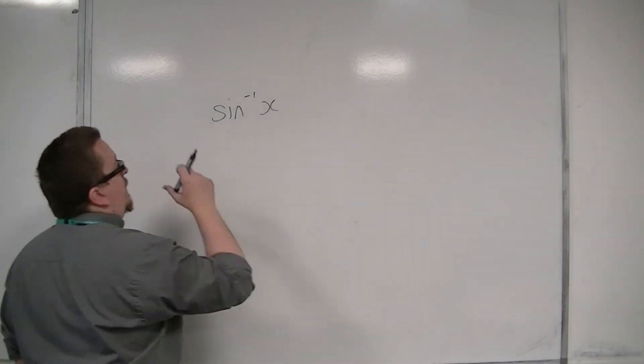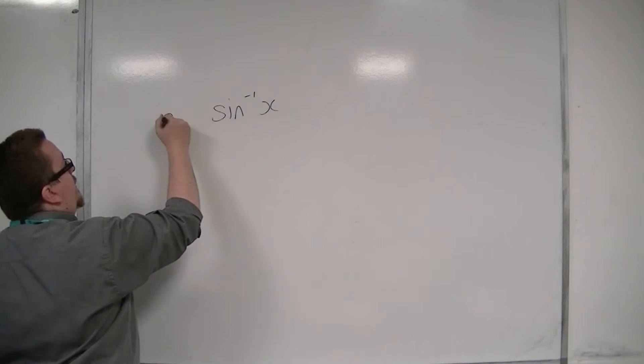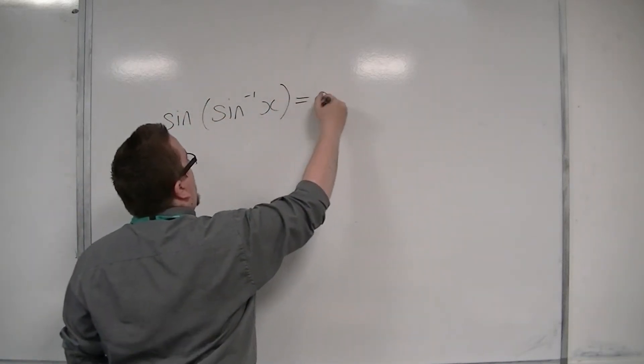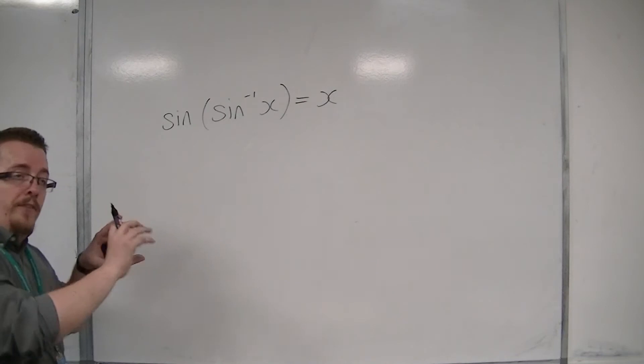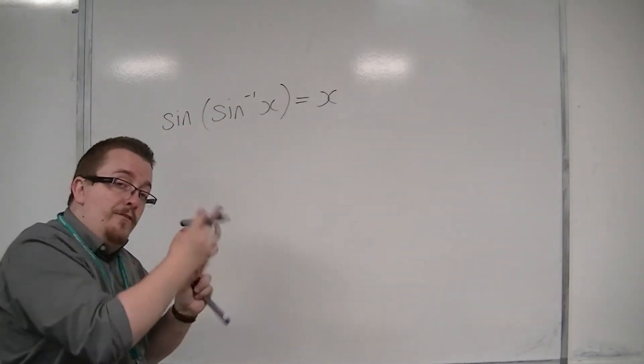So in actual fact, if you have inverse of sine, and then you sine of that, you get back to x, because inverse sine and sine cancel each other out. They invert one another.